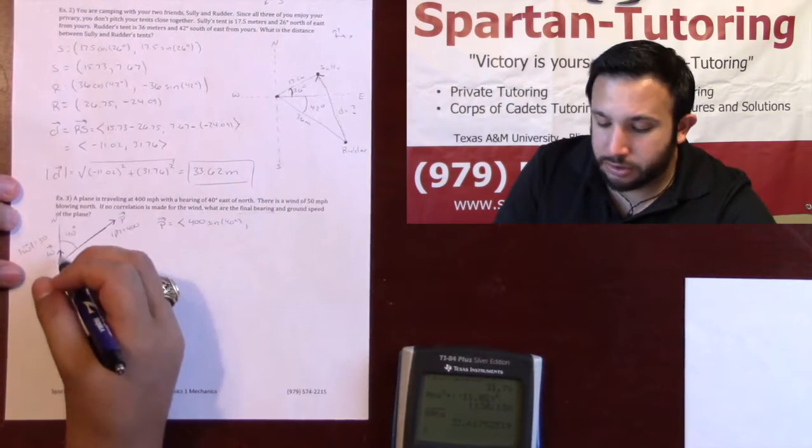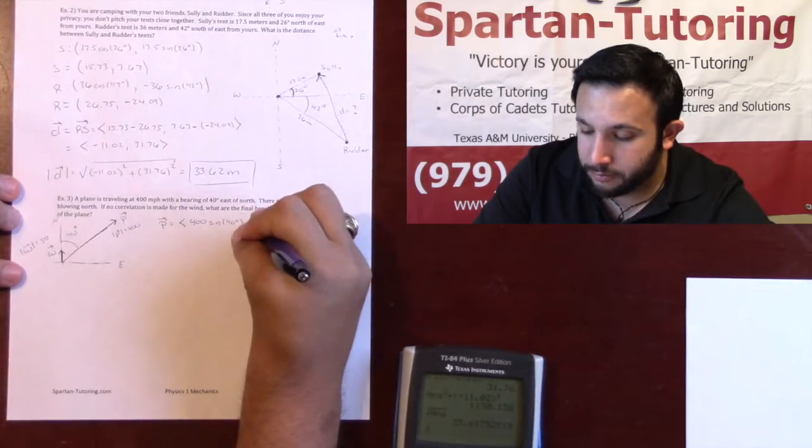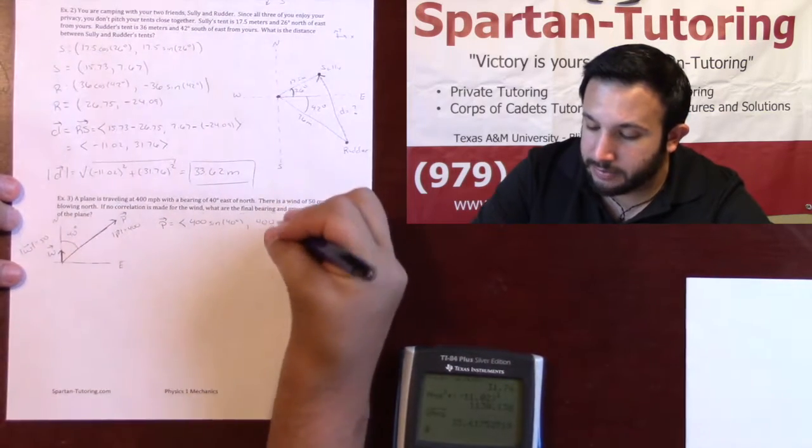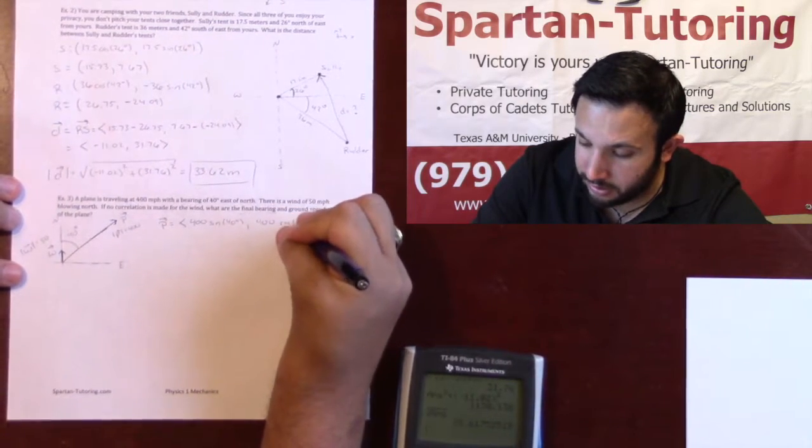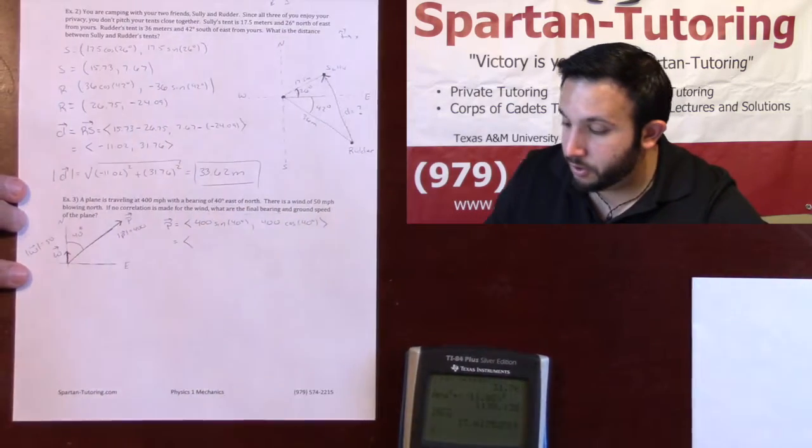As for the y component, the y component is also positive, so it'll be positive 400, but it's adjacent. Because it's adjacent to my angle, it's going to be cosine of 40 degrees. Let's go ahead and put those in the calculator.